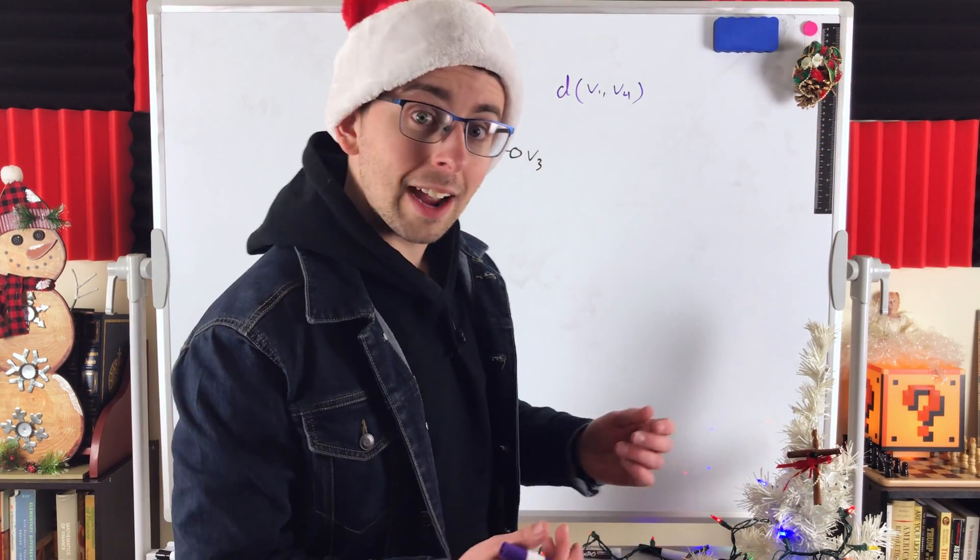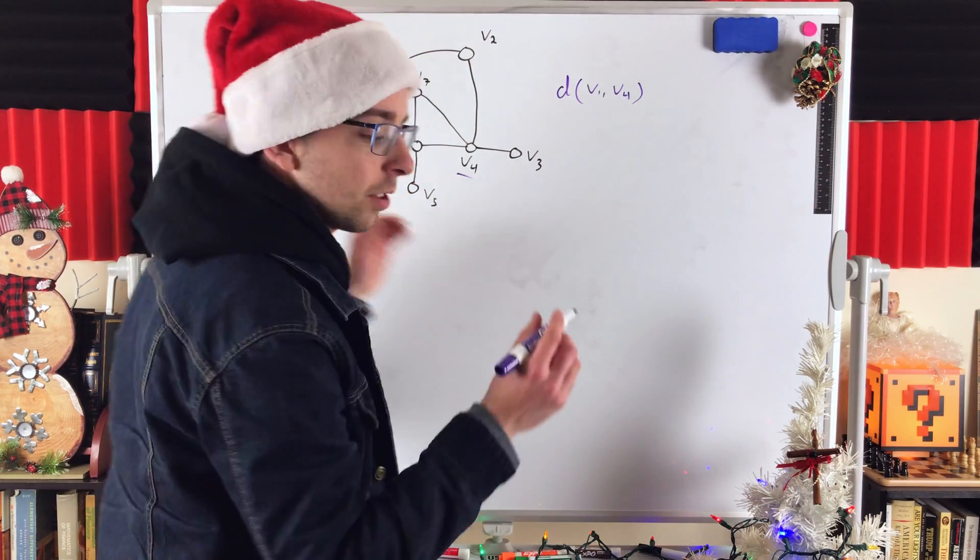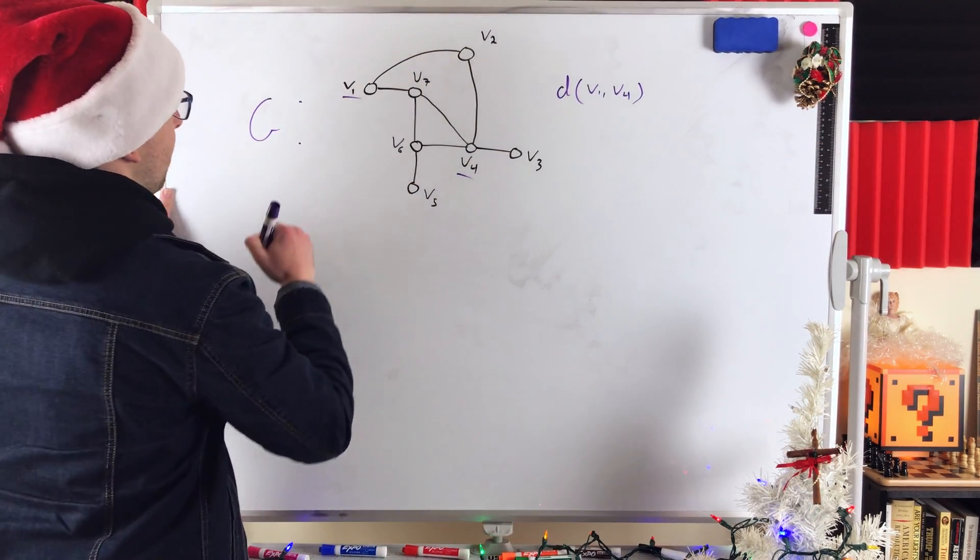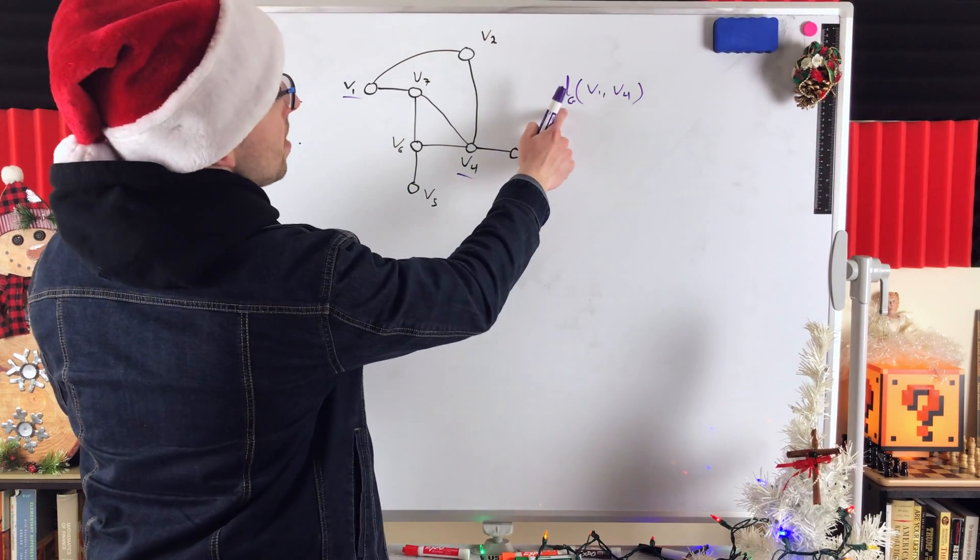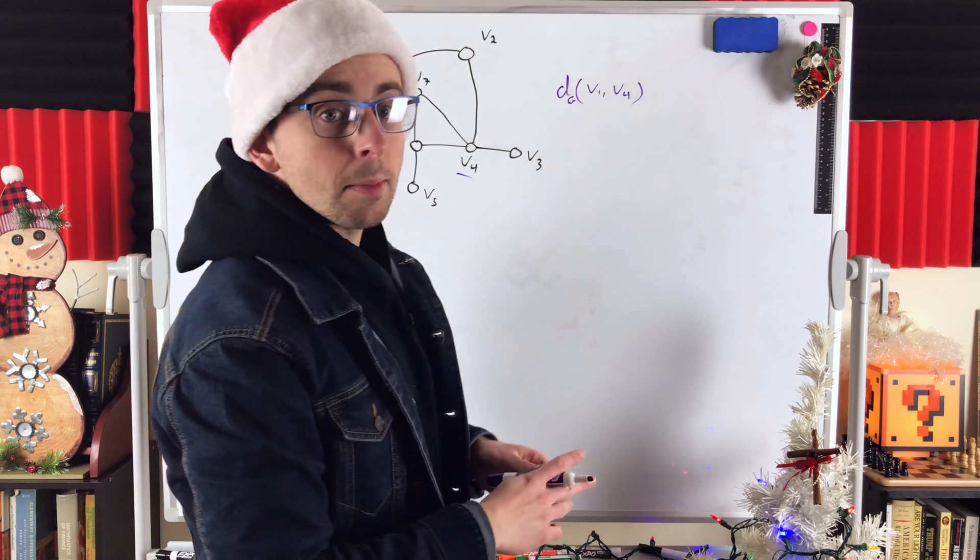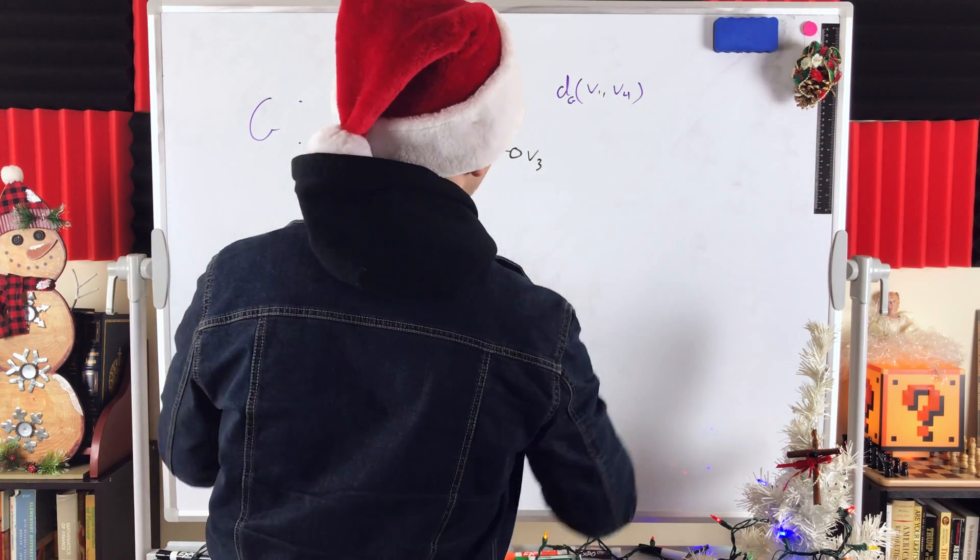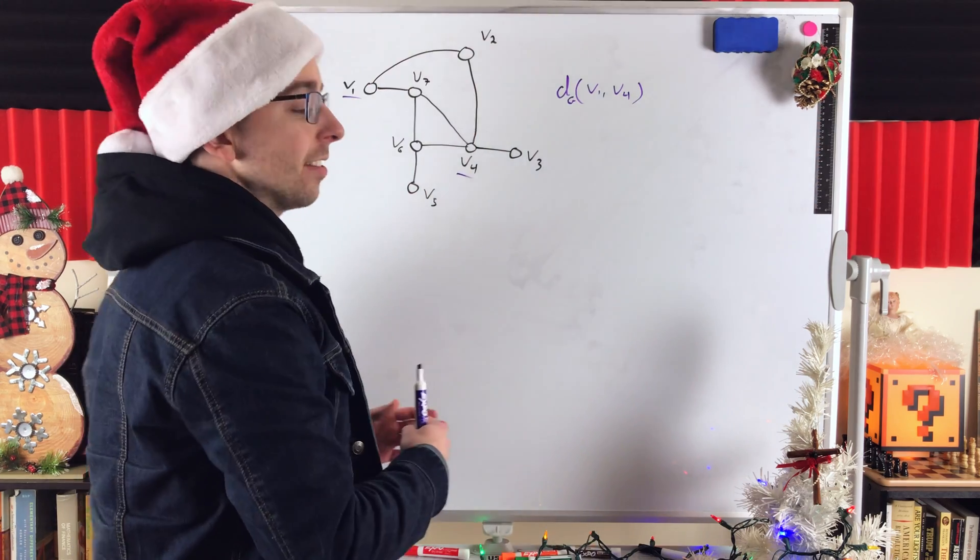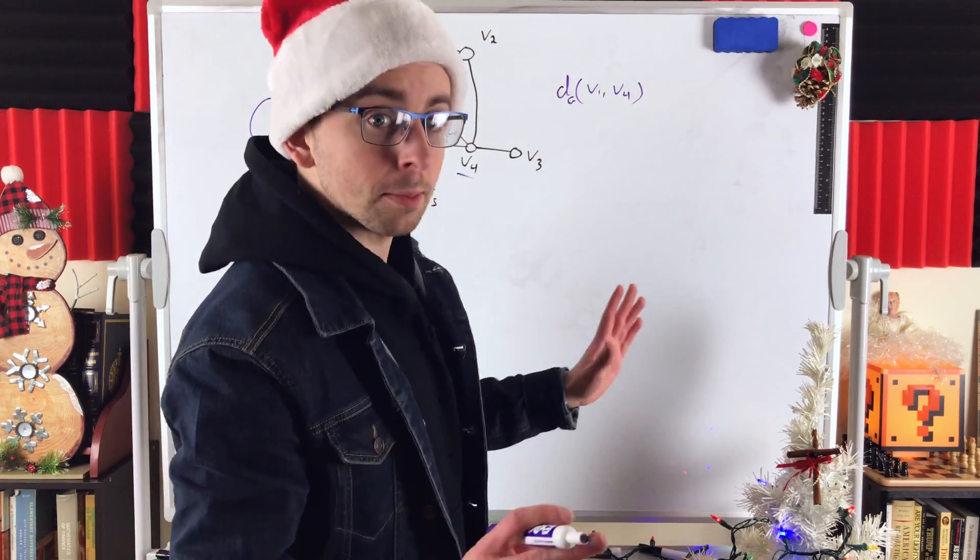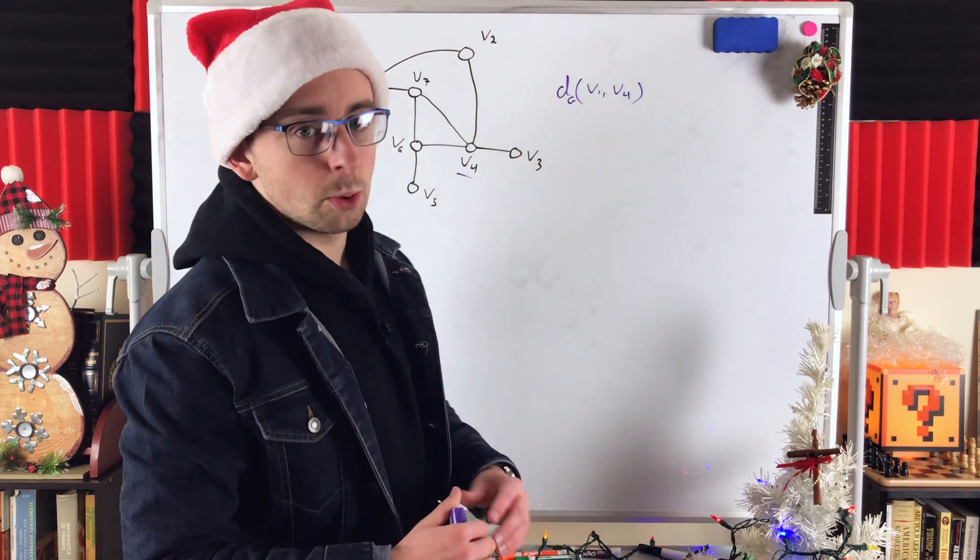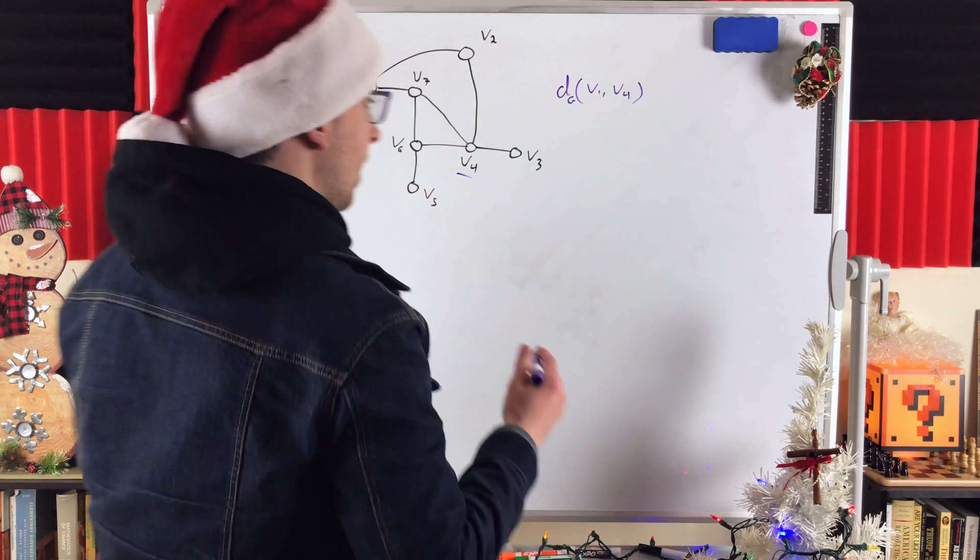But if you're working with multiple graphs at the same time, you might want to specify which graph you're talking about. So, for example, if we called this graph G, we could be more clear by writing G in the subscript of D to say we're talking about the distance between V1 and V4 in the graph G, as opposed to the distance between V1 and V4 in some other graph. If you're working with multiple graphs and you're talking about the distance between vertices, you can put the graph that you mean in the subscript.